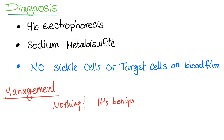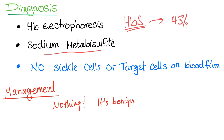For diagnosis, hemoglobin electrophoresis is the best — it tells you the type of hemoglobin and the amount of each hemoglobin, which is very useful. Sodium metabisulfite is also a good test; when it detects hemoglobin S, it is detectable in the test tube.